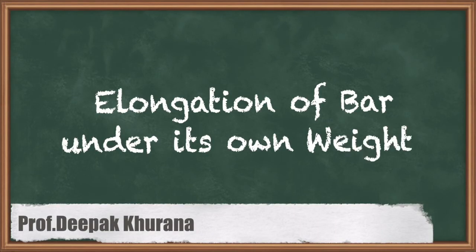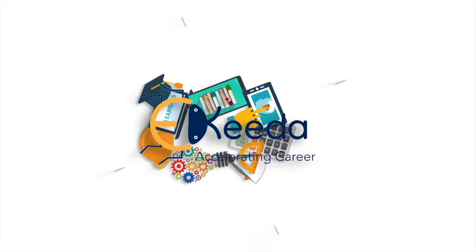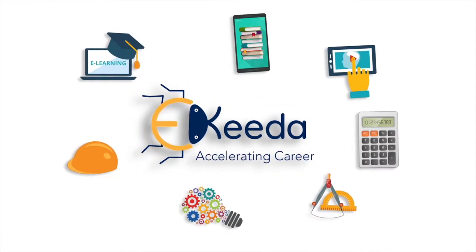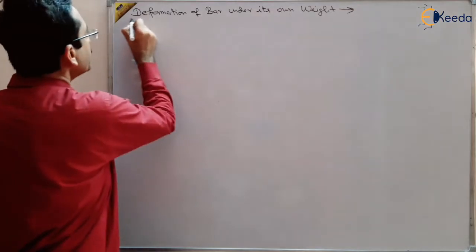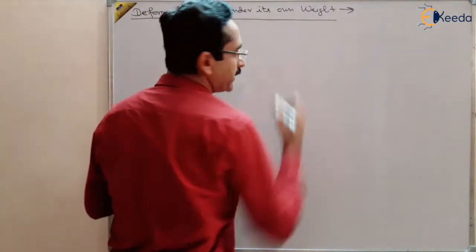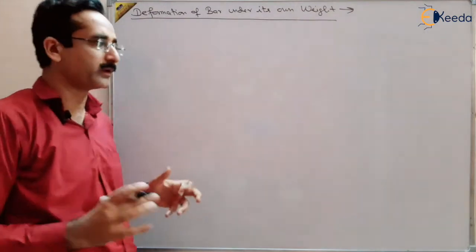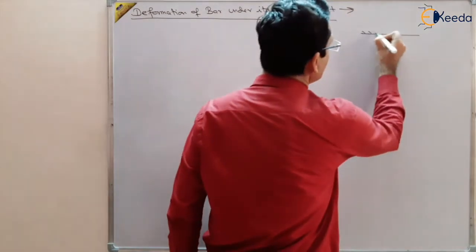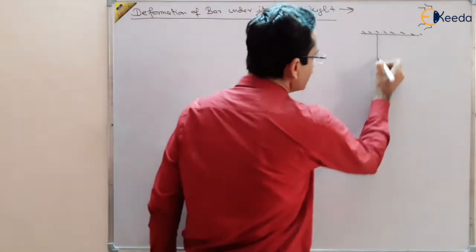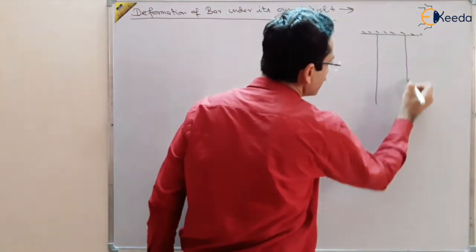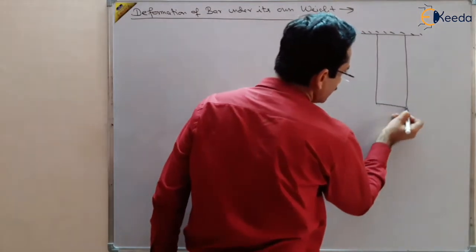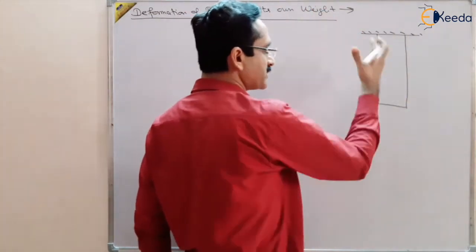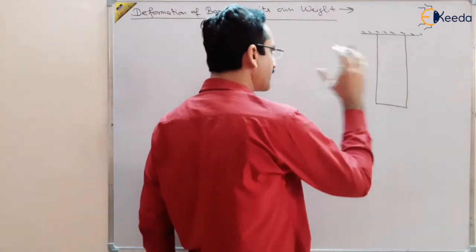Our next topic is finding the deformation of the bar under its own weight. We are not applying any external force on the body, but the weight of the body itself is causing deformation. Suppose this is a bar which is vertically hanging — just due to its own weight there will be some deformation, and we want to find out that deformation.